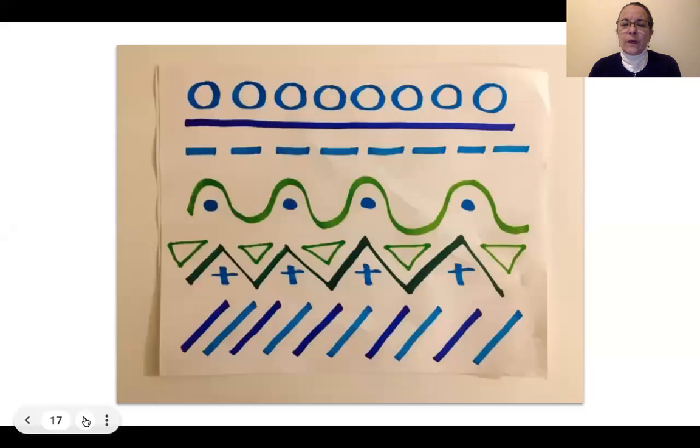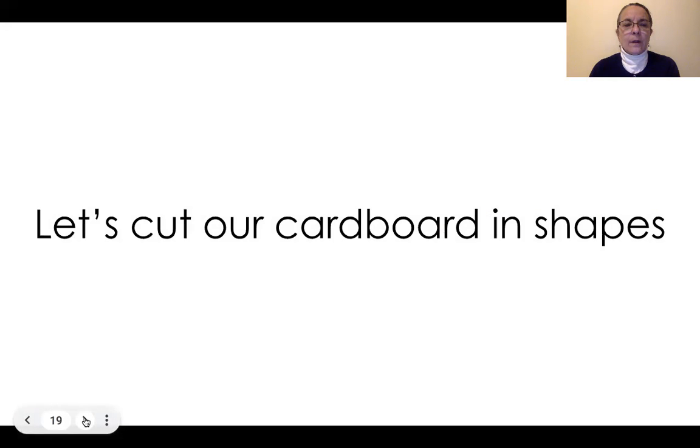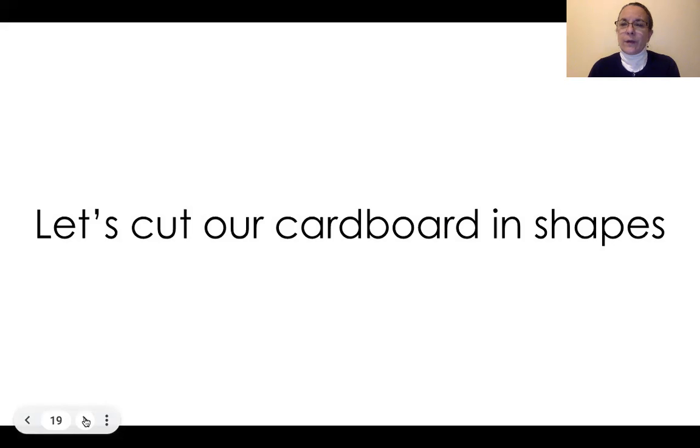And we can also create some diagonal lines and start creating patterns with the different color markers that we have. How about if we can think of including some other shapes in our lines, for example, dots or triangles. And we can start experimenting with different designs. Because what we would like to do is to create similar designs in the shapes of our cardboard later on. So once we take one line and repeat it very often, that's going to become a pattern.